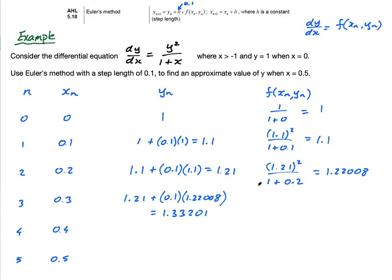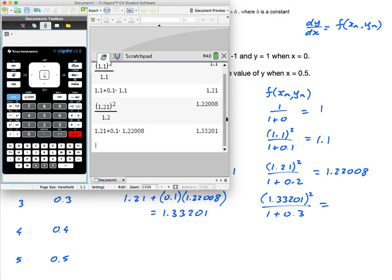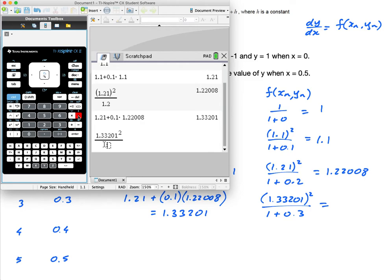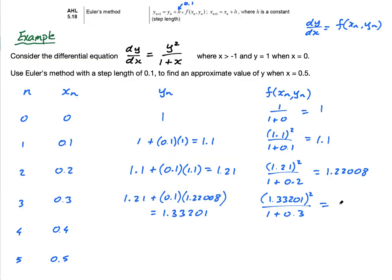1.33201. Nearly finished. Well, a few more to go. Now, I have to square y squared. What's y? This. So, it's 1.33201 squared. All over 1 plus 0.3. And this equals. 1.33201 squared all over 1.3. This gives me 1.36481. 1.36481.